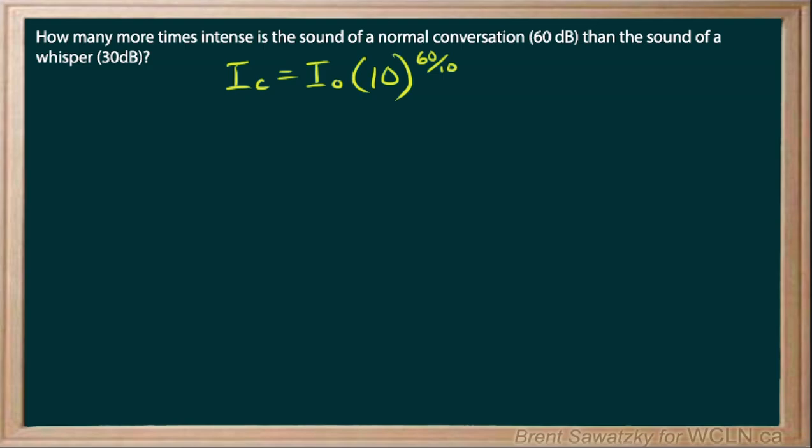So let's take a look at our whisper. Again, base intensity 10 times, and it's 30. But again, don't forget to divide that by 10.